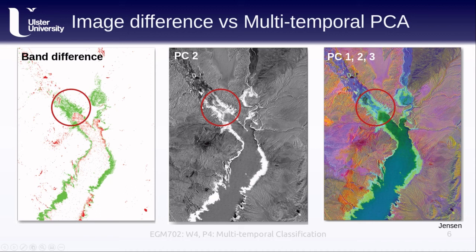For example, in the area where the lake level has dropped and land is exposed, we see a positive change from one image to the next, represented by high values in the second principal component and green values in the decorrelation image. We also have areas with the opposite — a decrease in reflectance between the two images — represented by dark colors in the second principal component and dark blue-purple colors in the decorrelation stretch.